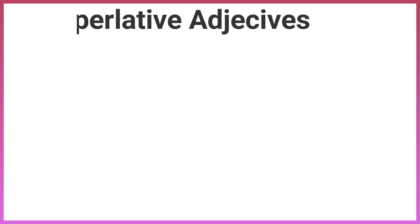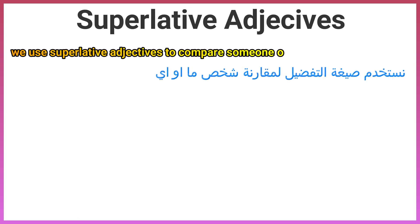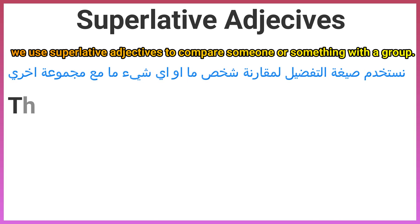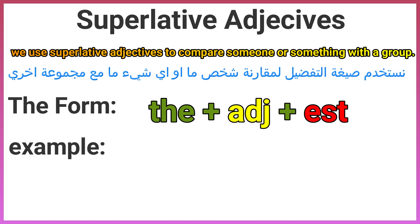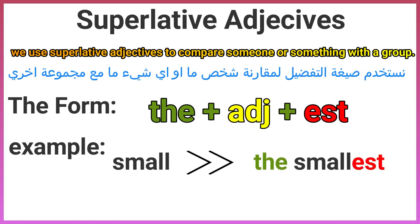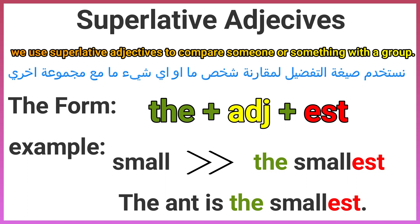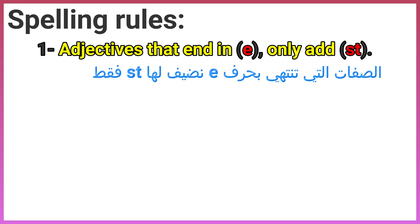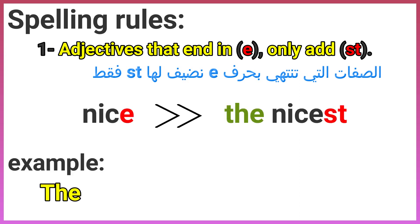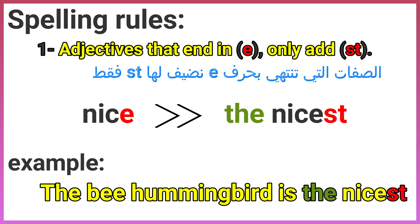Superlative adjectives: we use superlative adjectives to compare someone or something with a group. The form is: the + adjective + est. For example: small → the smallest. An ant is the smallest. Rule 1 — adjectives ending in 'e' only add 'st'. For example: nice → the nicest. The bee hummingbird is the nicest.